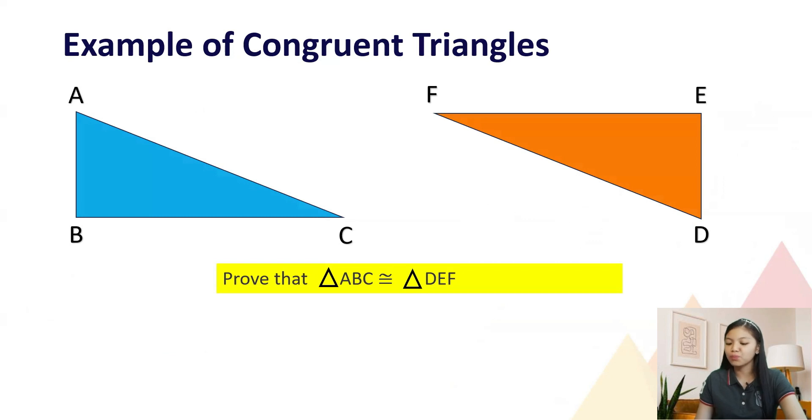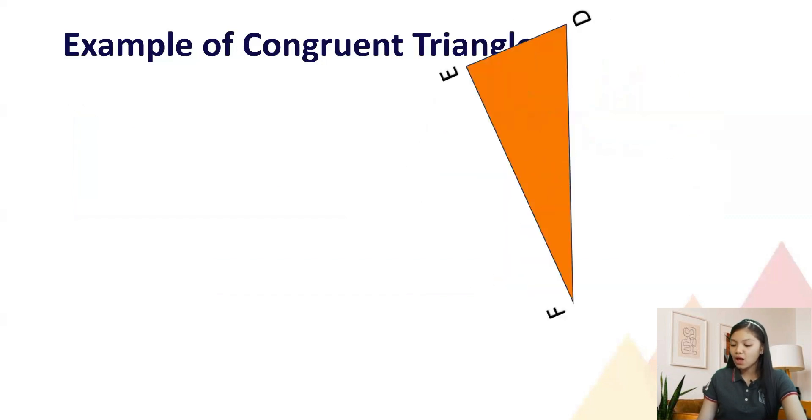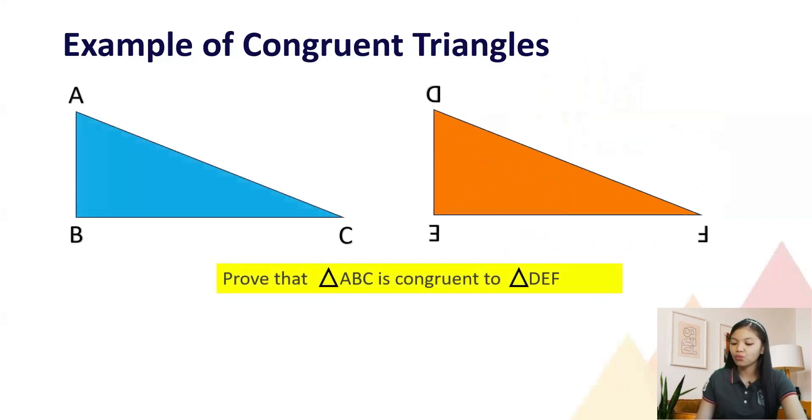Okay, so how can we prove that triangle ABC is congruent to triangle DEF? Since there are no given measurements or symbols, what we can do is we can rotate or flip the triangles so that we will be able to see if they have the same size and shape when they overlap.